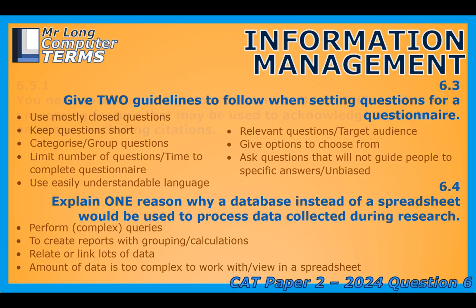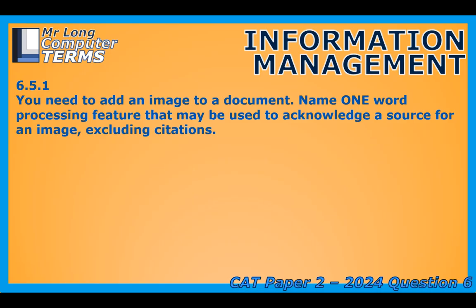Here's a practical question: suppose a learner needs to add an image to their document. What word processing feature could they use to acknowledge the source of the image, excluding the use of citations? If you can't use citations, I would go with the caption option — that's a nice way to put a reference or details about a particular image, and then you can put in a table of figures. You can also display the information in the bibliography, or use an endnote or a footnote. Those are also good options.